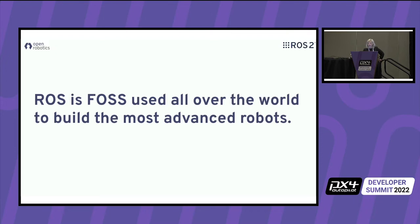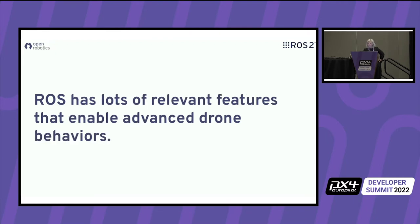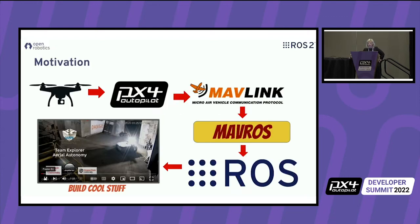Why should you care about ROS? Essentially, ROS is free and open source software used all over the world to build the most advanced robots. I saw a robot running down the street today — high likelihood it runs ROS. If you see vehicles running autonomously, flying autonomously, or swimming autonomously, there's a very good chance they're running ROS. ROS has a lot of relevant features that are going to enable you to do more advanced drone behaviors.